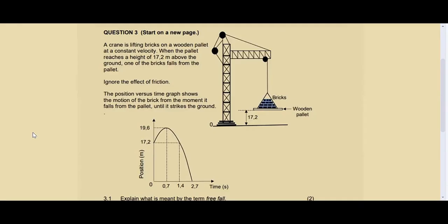We have Question 3 on vertical projectile motion, extracted from one of the past exam papers. It says a crane is lifting bricks on a wooden pallet at a constant velocity. When the pallet reaches a height of 17.2 meters above the ground, one of the bricks falls from the pallet. Ignore the effect of friction.